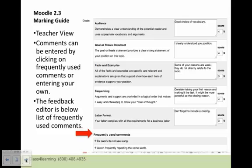So for example, here's now what the teacher view in the marking guide is. So I have set up my criteria: audience, goal, facts, sequencing. I now can just use my own typed in comments, as I've done here, or I can just click to have a frequently used comment come from my list of comments. Very, very powerful. And then I've set up my criteria scoring.